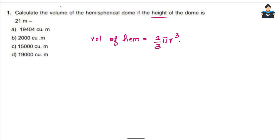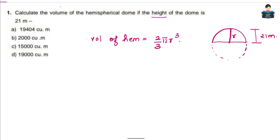The height here is 21 meters. For a hemisphere, the height is equal to the radius. That is, the height of the hemispherical dome is equal to the radius of the hemispherical dome.